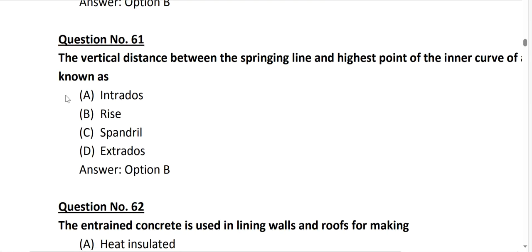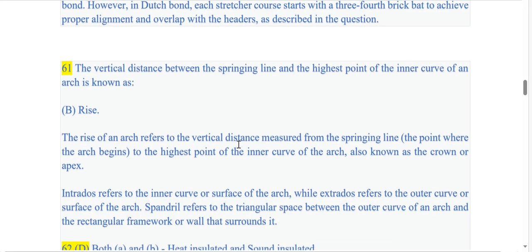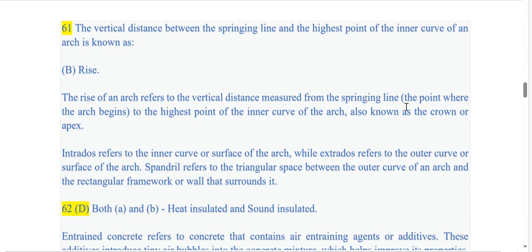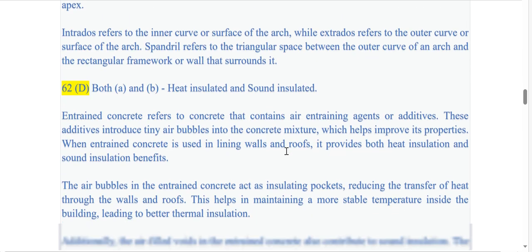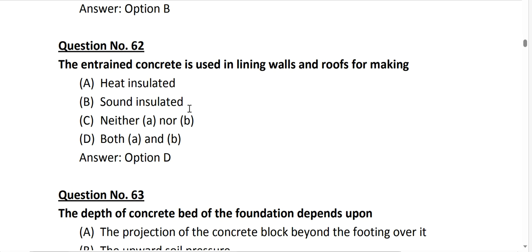Question number 60, the bond in which headers and stretchers are laid in alternate courses where every stretcher course consists of three-quarter brick bat, the correct answer is Flemish bond. In Flemish bond, the courses consist of alternate headers and stretchers, and in each stretcher course we are using three-quarter brick bat for proper alignment and overlap with the headers.